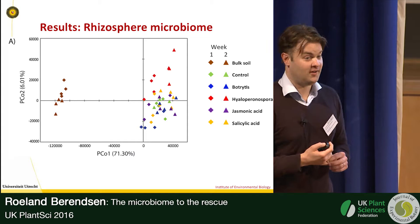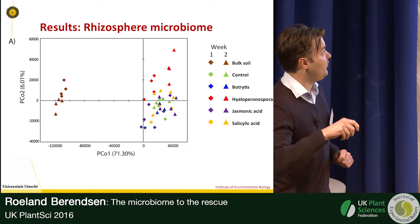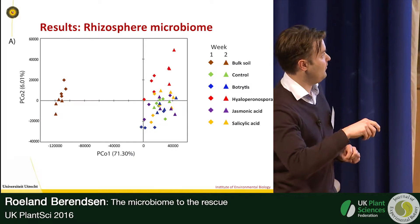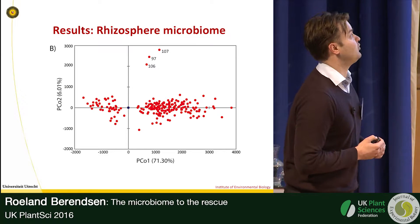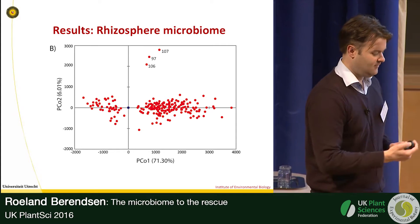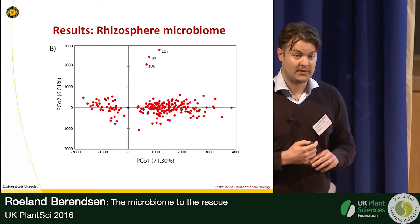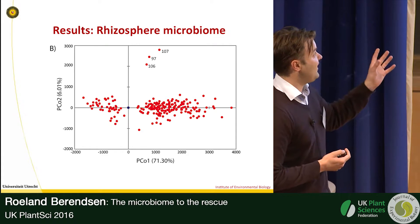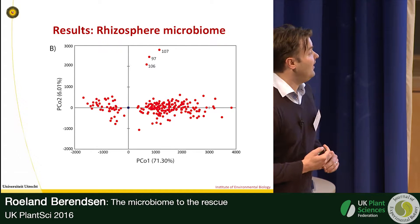The closer the dots are to each other, the more similar the communities are. The biggest difference across all samples is the difference between unplanted soils and planted soil samples — a phenomenon known as the rhizosphere effect, known for over 100 years. However, we do see some differences along the second component that separates the Hyaloperonospora-infected plant samples from the others. Looking at how individual OTUs relate in the PCA, there is a large group on the right correlated with planted soil samples that increase from bulk soil to rhizosphere.